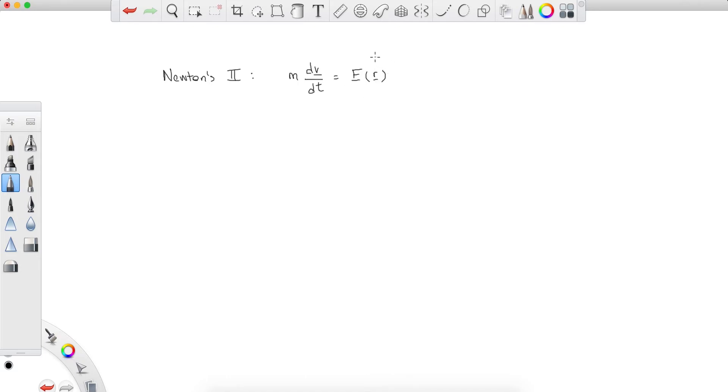And we saw earlier what this means. This means that for every point with position vector r, this assigns the force applied to that point. So what do we do? Well, we saw that earlier. We integrated with respect to position.